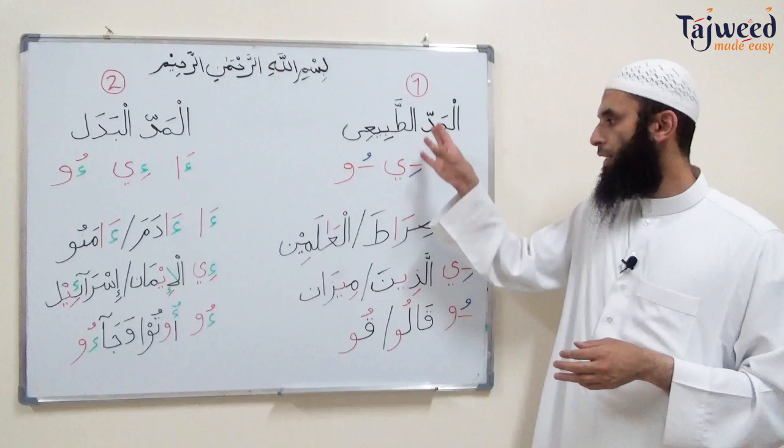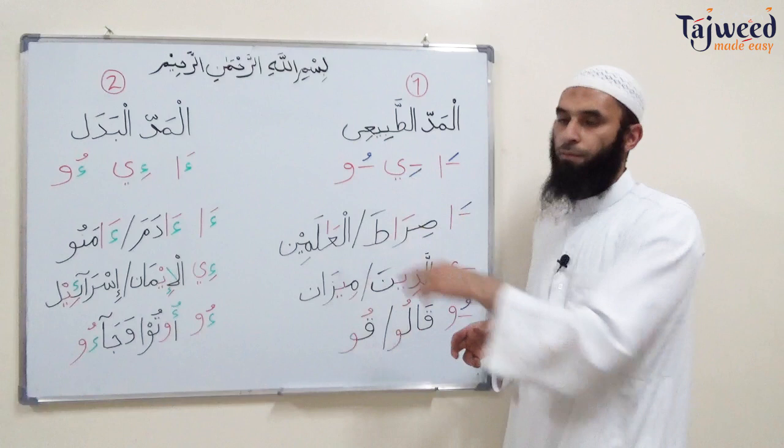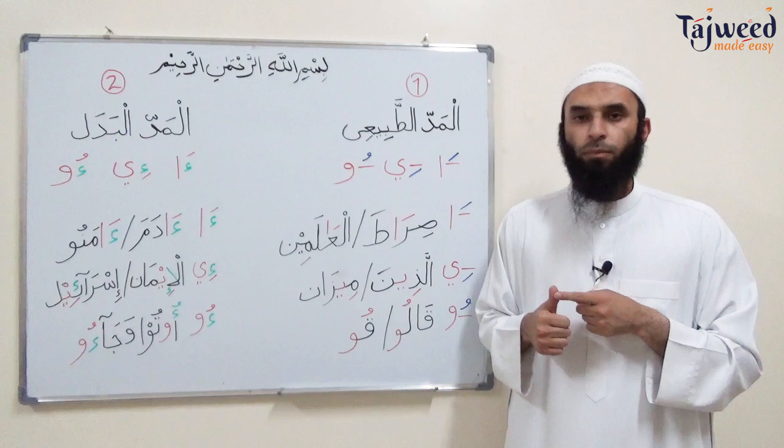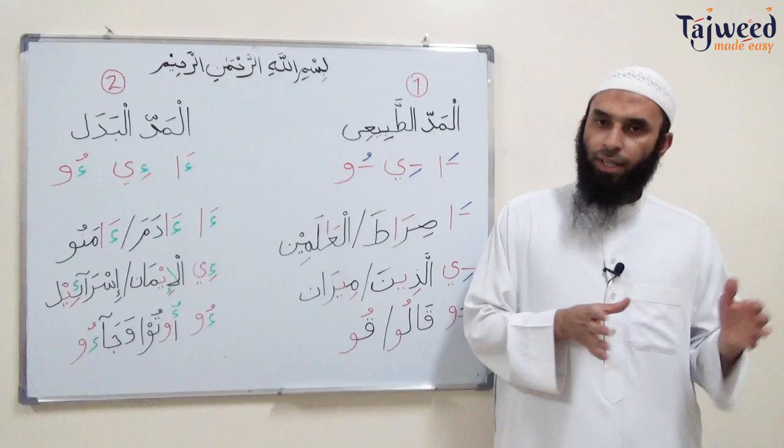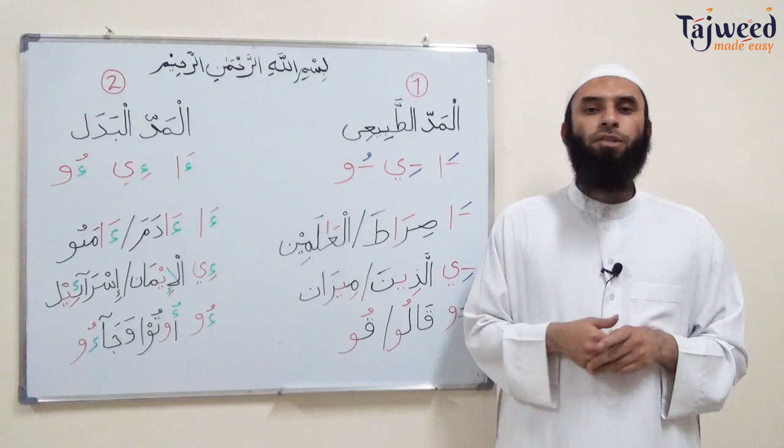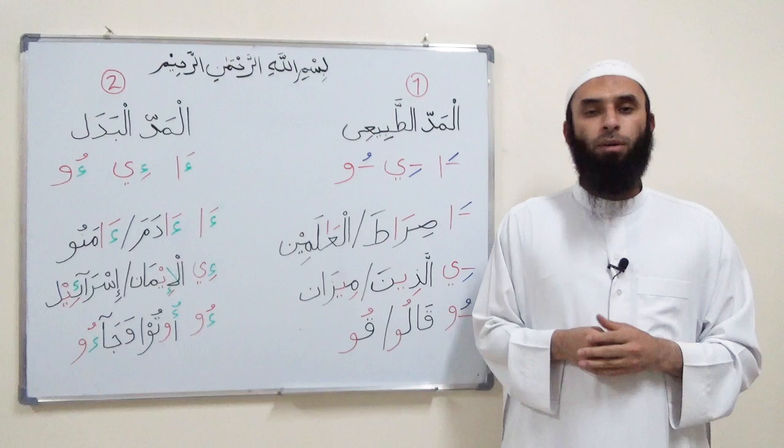So mad al-tabi'i and mad al-badal — today's lesson, we covered two of the first nine mads. We also learned the linguistic and applied meaning of the word mad, how to measure mad in the different types, and went through all nine types of mad. From the next lesson, we're going to do the next three: mad al-iwaz, mad al-silat al-sughra, and mad al-silat al-kubra. Until then, jazakum Allah khayran. Wassalamu alaykum wa rahmatullahi wa barakatuh.